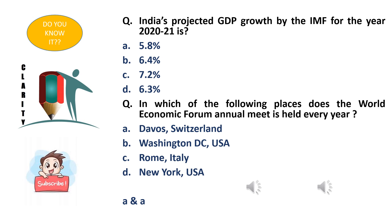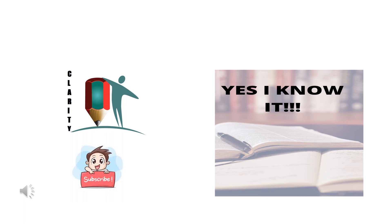Moving on to the last question of today's session: in which of the following places is the World Economic Forum annual meet held every year? Option A - Davos, Switzerland, option B - Washington DC, USA, option C - Rome, Italy, option D - New York, USA. The World Economic Forum is held every year in Switzerland, that is Davos. The right option is option A - Davos, Switzerland.